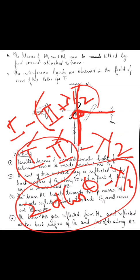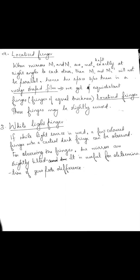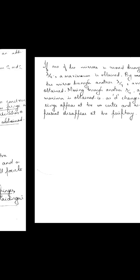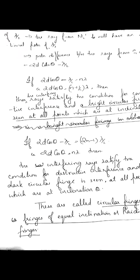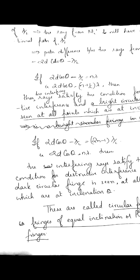So the effective path difference is 2d·cos θ minus λ/2. If that path difference is equal to n·λ, then you get a bright fringe.